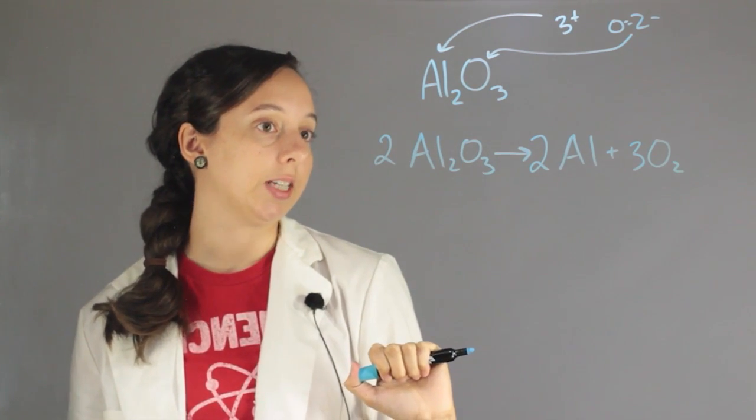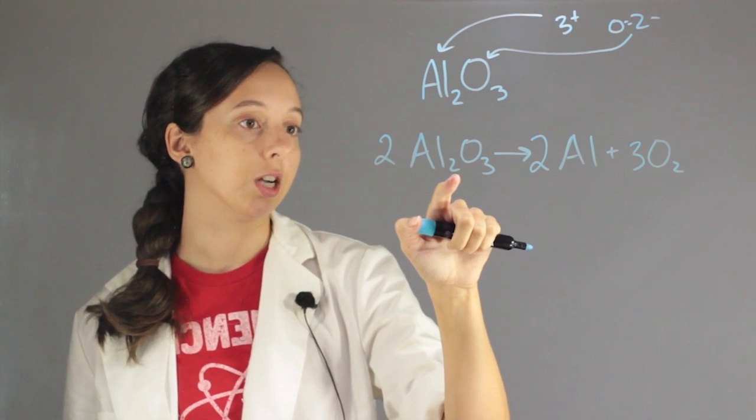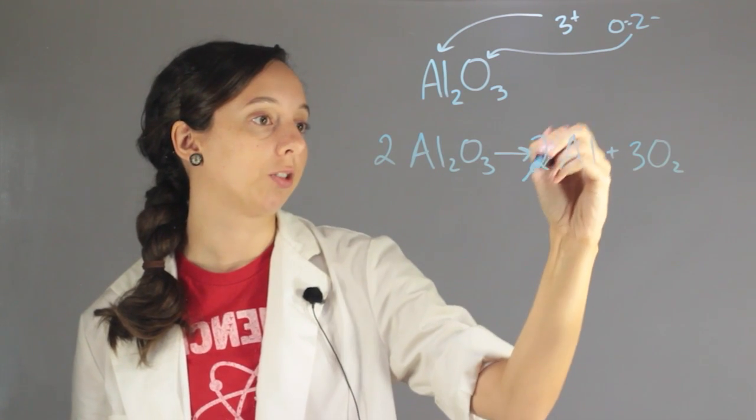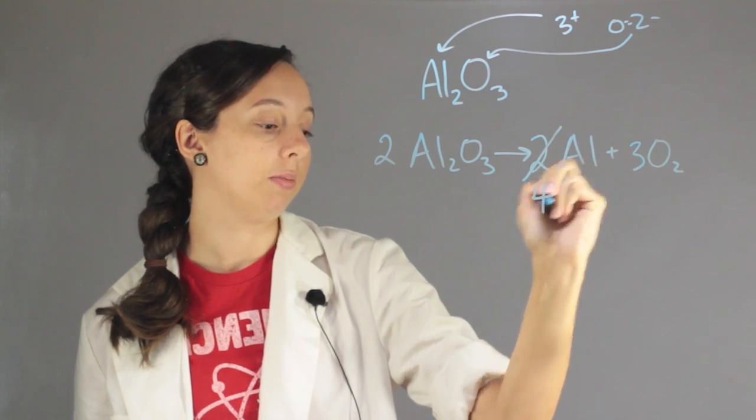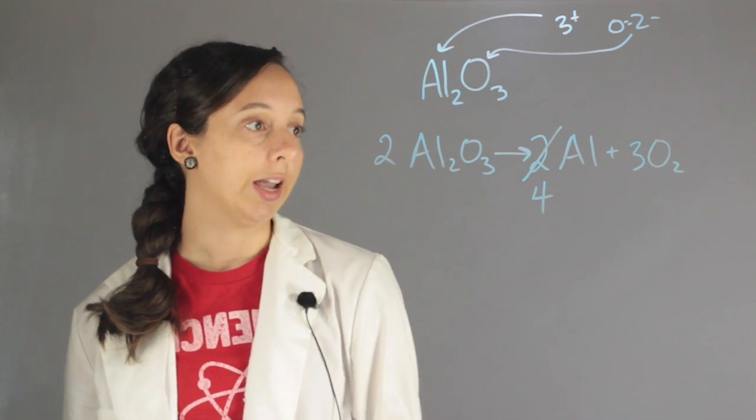But now we can see that our aluminums aren't balanced because we have two here. We also have two here, which means there's four total aluminums. So that means we have to get rid of our original two and make it a four. And now everything is balanced and it works out.